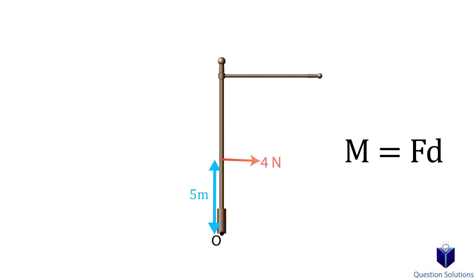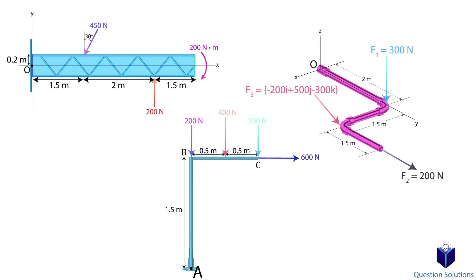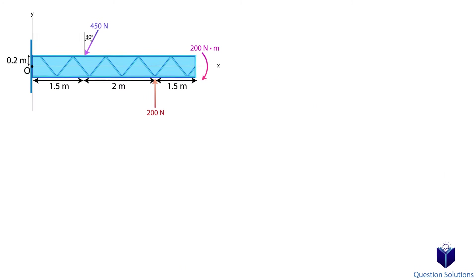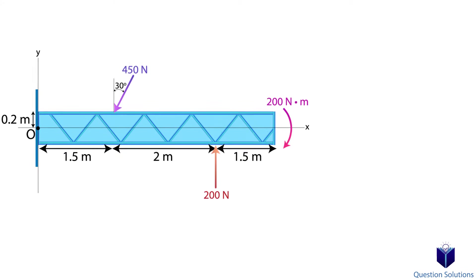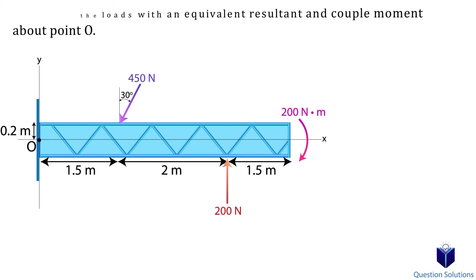Now we'll move on to some examples. Let's take a look at this problem, where we need to replace the forces and moments affecting the beam by an equivalent resultant force and a couple moment at point O. Let's start with the forces.